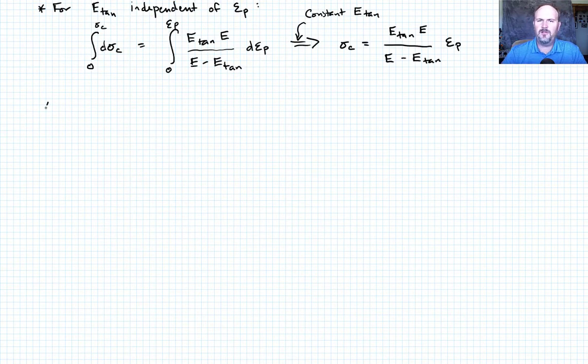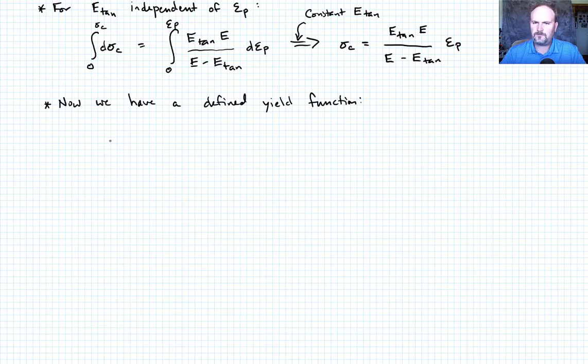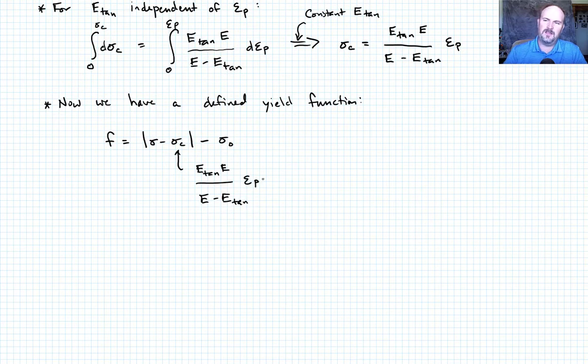So now what we've done through this is been able to define the yield function. So that function, I'll remind you, is equal to, it says the yield function f is the magnitude of sigma minus sigma c minus sigma naught, and we now know what the back stress is. This is e tan e over e minus e tan times epsilon p. Again, that's only if e tan is constant, otherwise we have to solve it incrementally.